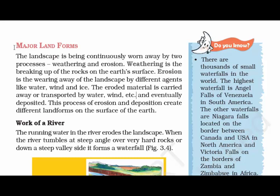Now we'll read about the major landforms. The landscape is being continuously worn away by two processes: weathering and erosion. Weathering is the breaking up of rocks on the earth's surface. By the word weathering, you can figure out that it has something to do with the change of weather. A piece of rock doesn't stay the same after a few years — a continuous change of weather acts upon it as an agent which breaks it down. Erosion is the wearing away of the landscape by different agents like water, wind, and ice.